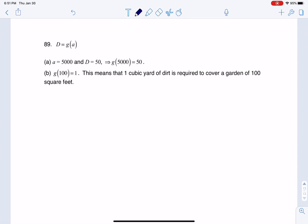Hey, Matt 31, I had a question coming out of section 3.1, number 89, and this is where they said the number of cubic yards of dirt, D, needed to cover a garden with A square feet is given by D equaling g(a).